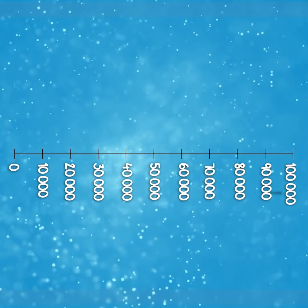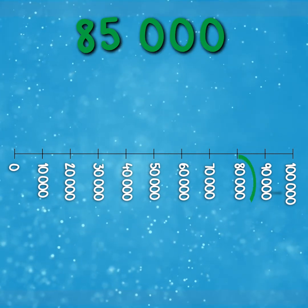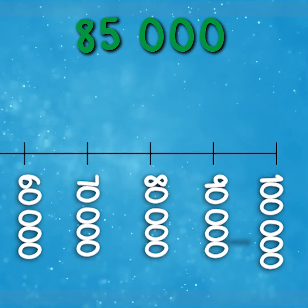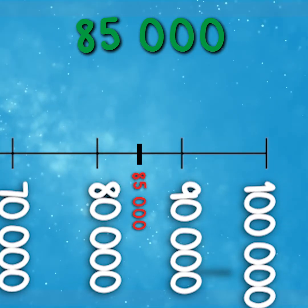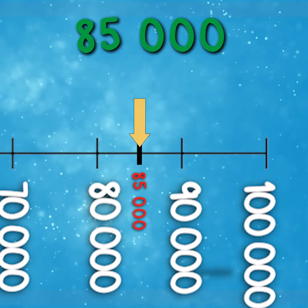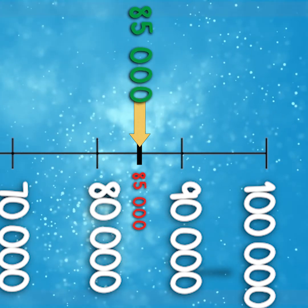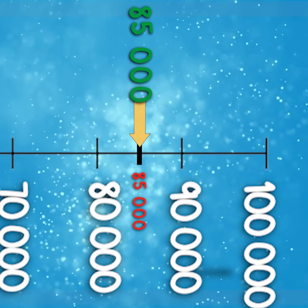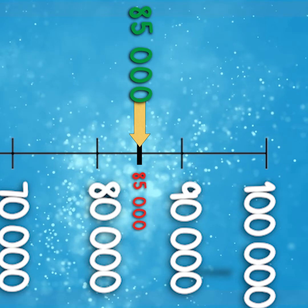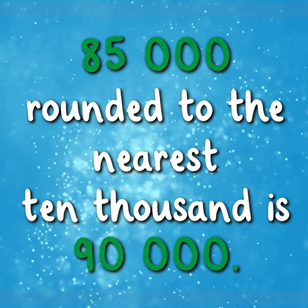Again, using our number line, we're going to round 85,000 to the nearest 10,000. We already know that 85,000 sits between 80,000 and 90,000, and 85,000 is the midpoint. We notice here that it does not sit closer to either — in fact, it lies exactly halfway between 80,000 and 90,000. In this case, when rounding to the nearest 10,000, if our number lies exactly halfway between the multiples of 10,000, we round to the next multiple, which in this case is 90,000. Therefore, 85,000 rounded to the nearest 10,000 is 90,000.